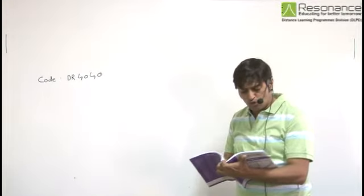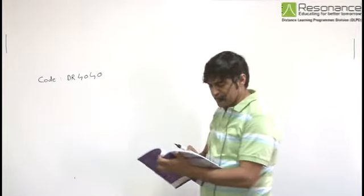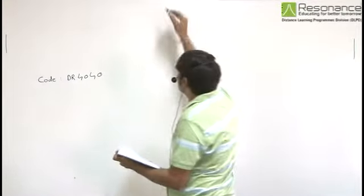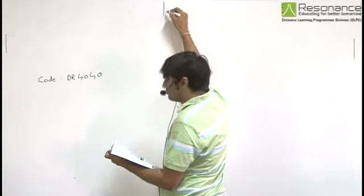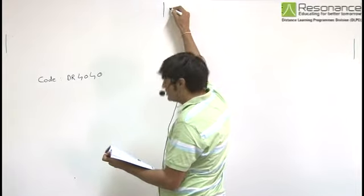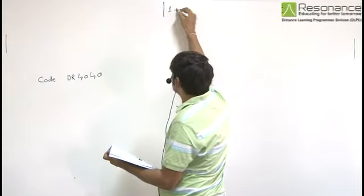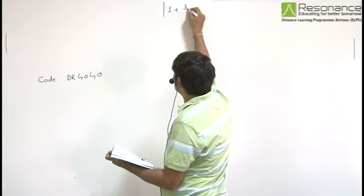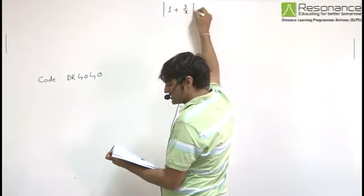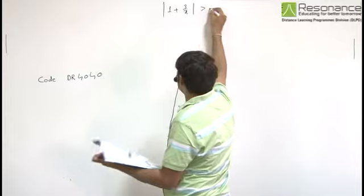Complete solution of this inequality: mod of 1 plus 3 by x is greater than 2.